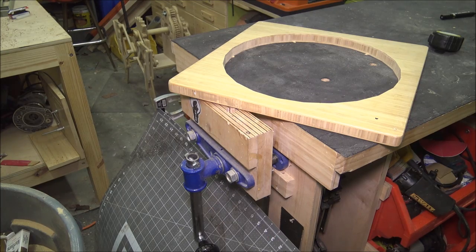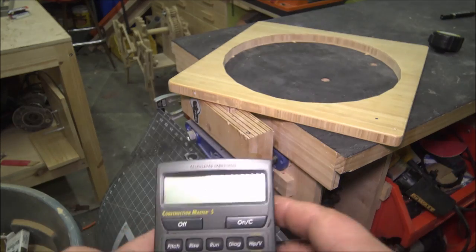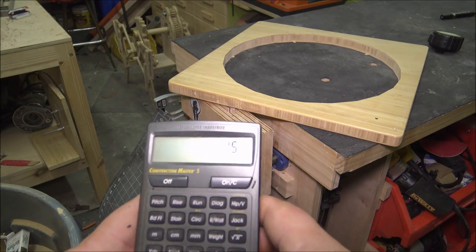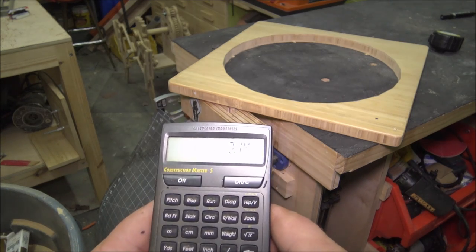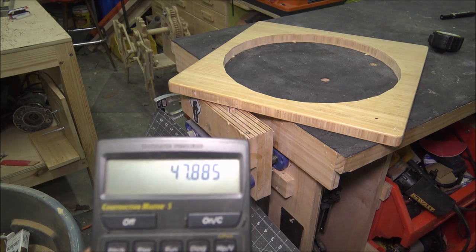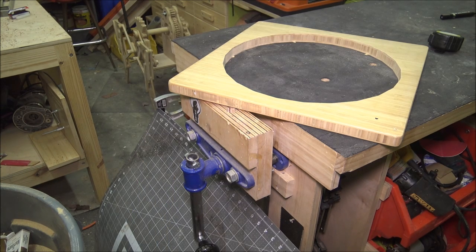Now just to show you that this works, that circle was 15 and one quarter inches in diameter times pi, 47.8 inches. I only had an inch of waste.